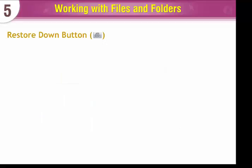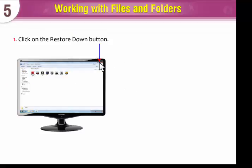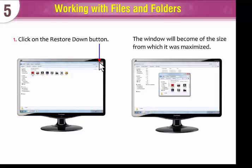Restore down button. The restore down button will be displayed only when the window is maximized. It will restore the window to the previous size from which it was maximized. Let's do it. To restore down the window, click on the restore down button. The window will become the size from which it was maximized.